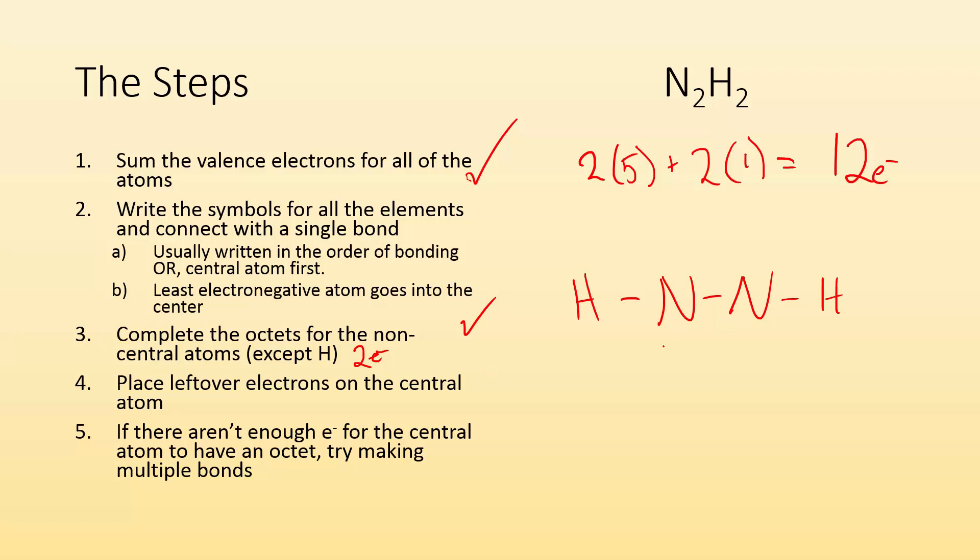Place leftover electrons on the central atom. Here I kind of have like two central atoms and I have, how many electrons have placed so far? I got one bond, two bonds, three bonds. So that means I placed six electrons. I have six electrons left to place. If I were to place them evenly around the two central atoms, you would get something that hopefully just doesn't look right to you. Like why does that nitrogen have one unshared electron? And then also there's the problem of the fact that now each of these nitrogens have seven valence electrons. They don't have an octet.